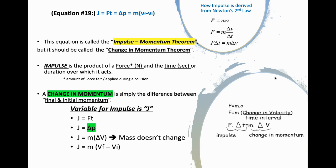Let's jump into equation 19. J, or impulse, is equal to force times time, which is equal to delta p — the change in momentum — which is equal to mass times the final velocity minus initial velocity. This equation is called the impulse-momentum theorem. In reality, it should be called the change in momentum theorem. Impulse is the product of a force and the time or duration over which it acts — specifically, the amount of force felt or applied during a collision.